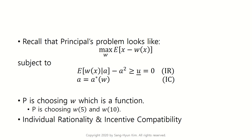The principal is choosing a function w to maximize expected profit. In this example, choosing the function simply means choosing w(10) and w(5). In plain words, the principal is choosing the wage level when revenue is low and the wage level when revenue is high. By choosing these two values, the principal — in mathematical terms — is choosing a function to maximize the expected profit.